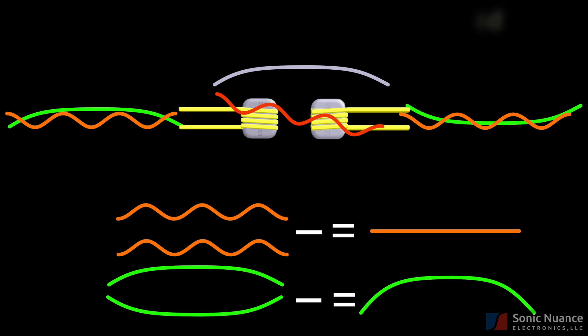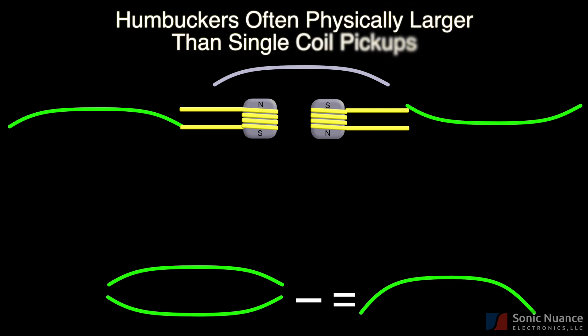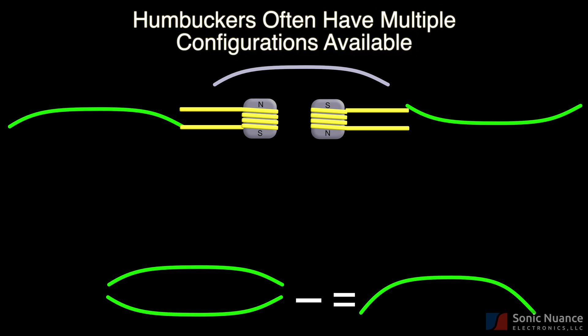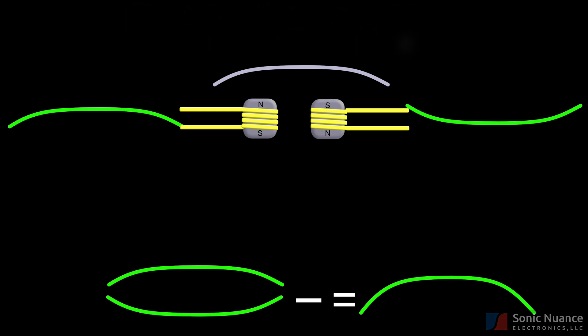This is why humbuckers are usually twice as big as single coils. There are usually two single coil pickups within them. Depending on the manufacturer, there are ways to do things such as coil tap or select the individual single coils within the pickup.